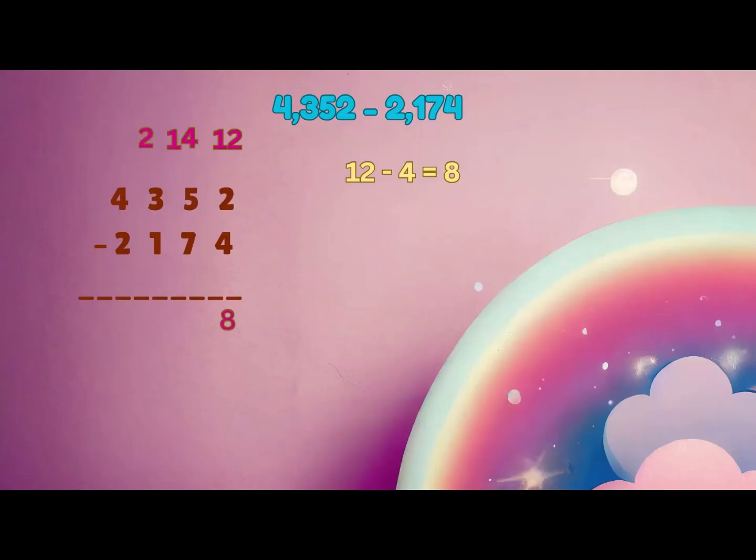14 minus 7 is equal to 7. Place 7. Now subtract hundreds. 2 minus 1 is equal to 1. Now let's subtract thousands.